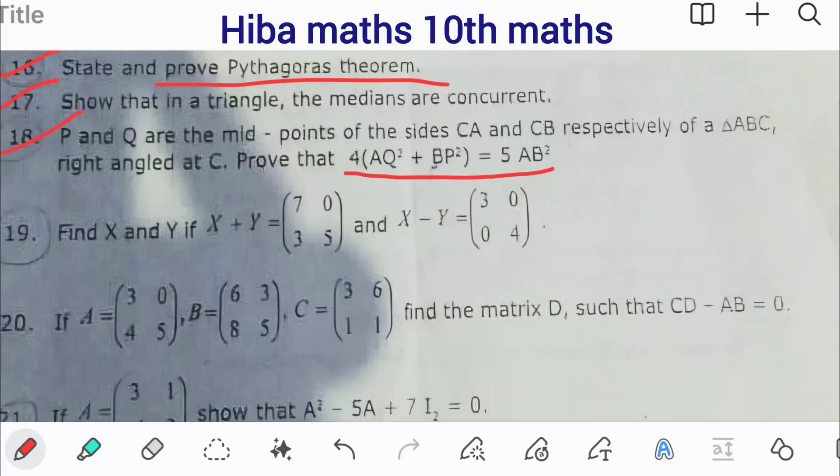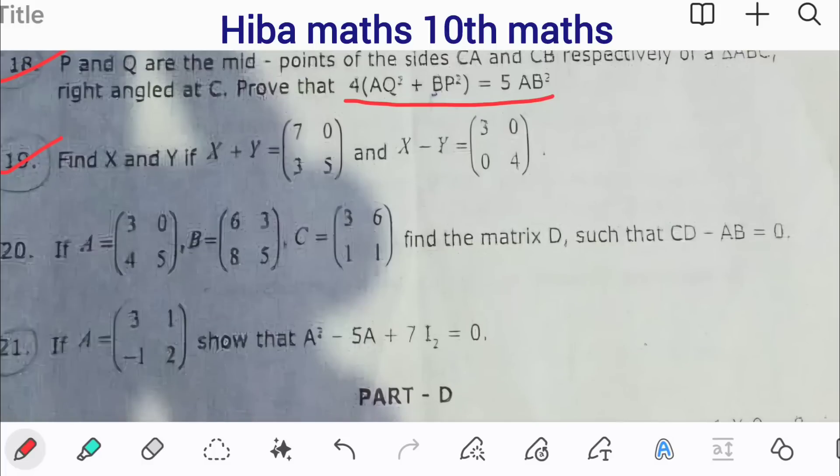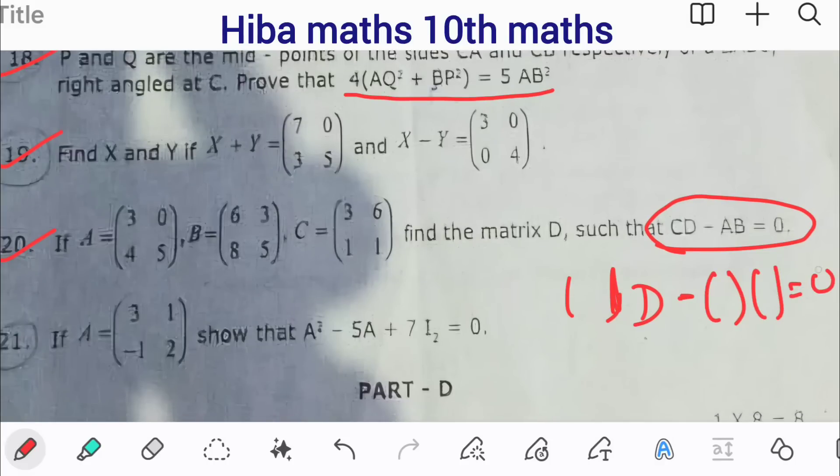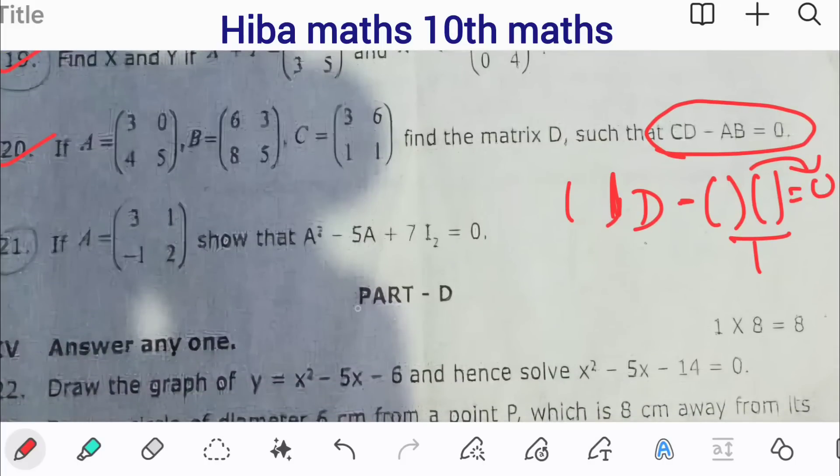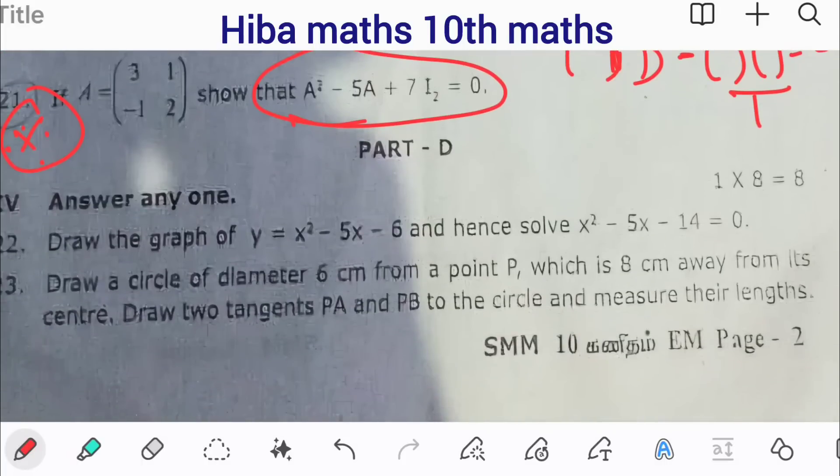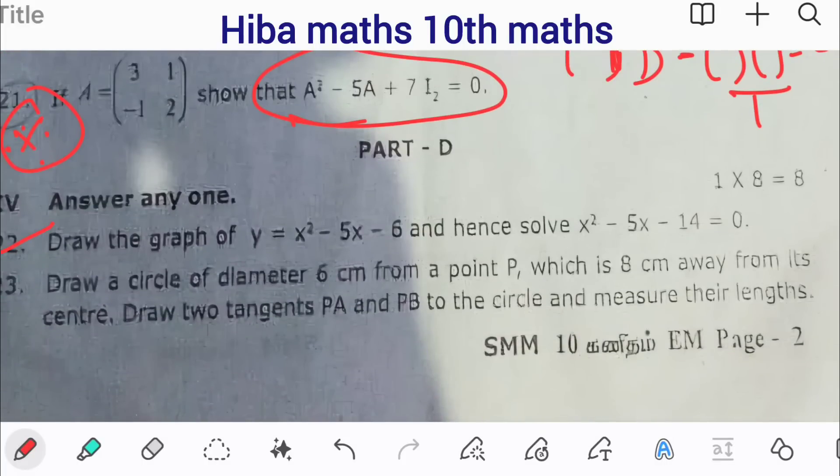Question 19: Solve using matrix elimination method. X + Y equals [7, 0, 3, 5] and X minus Y equals [3, 0, 0, 1]. Solve using elimination method. Question 20: If A equals a given matrix, find matrix D such that CD minus AB equals 0. You need to multiply and divide the matrices. Question 21: If A equals [3, 1, minus 1, 2], show that A² minus 5A plus 7I equals 0. You need to find A squared, then subtract 5A, plus 7 times the identity matrix I.